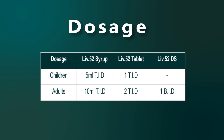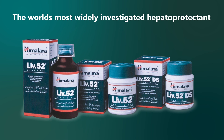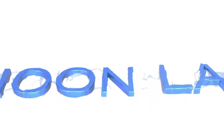The dosage of LIV-52 is as follows: LIV-52 syrup — 5 ml TID in children, 10 ml TID in adults. LIV-52 tablet — 1 tablet TID in children, 2 tablets TID in adults. LIV-52 DS tablet — 1 tablet BID in adults. LIV-52: the world's most widely investigated hepatoprotectant, helping the liver function at its best.